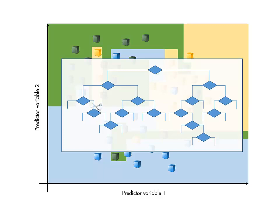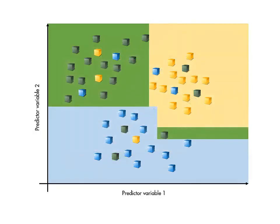You can prune a tree, that is, reduce the number of splits, to create a simpler model that may have a higher resubstitution loss, but better generalization to new data.